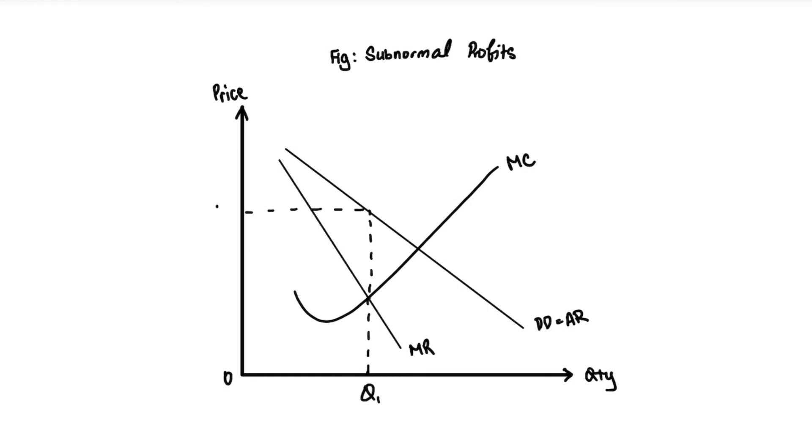So Q1, P1. When you're looking at the case of subnormal profits, we are looking at a curve of AC that is more than AR, as we have learned before in our topical series. So we're going to draw an AC curve over here that just looks something like this. This is just a curve that will occur above your AR curve.